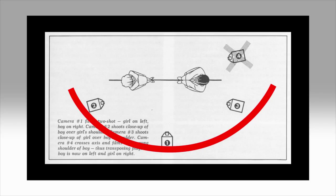you place camera two in a position, camera three is in exactly the same place opposite when you are filming the other actor. If you filmed this setup in your conversation it should look like this.